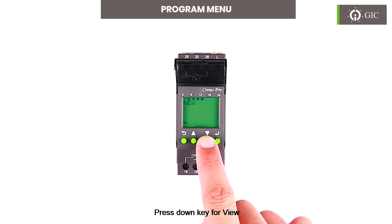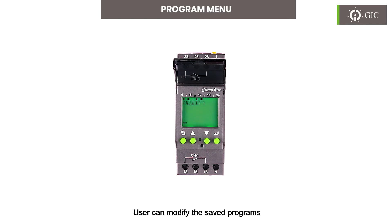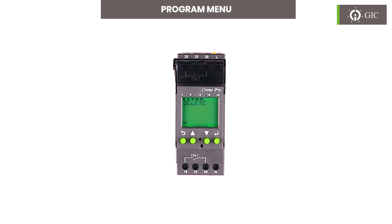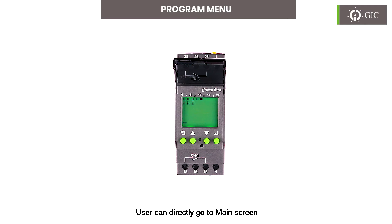Press the down key for 'View' — the user can view the saved programs. Press the down key for 'Modify' — the user can modify the saved programs. Press the down key for 'Delete' — the user can delete either a single program or all programs. Press the down key for 'End' to go directly to the main screen.